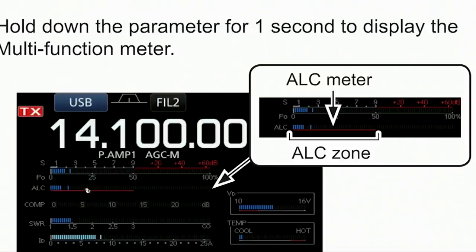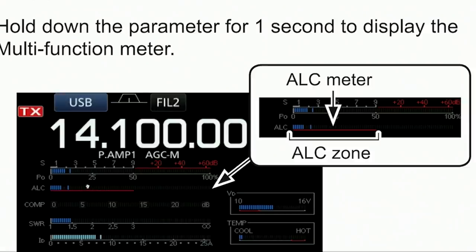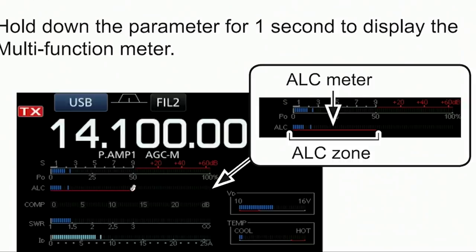They're saying keep these bars no further than half. My recommendation would be no further than half — on average, probably at 25 percent. On some words you may have no bars indicating, and that's fine as long as the output is good. Always keep the ALC below 50 percent. If you run the mic gain up to the point where these bars are lit up all the way to full scale, there's going to be some distortion and clipping of the audio waveform, which is going to produce harmonics in the passband and some distortion. You want the ALC to be half scale or less, and for most of the time, much less.